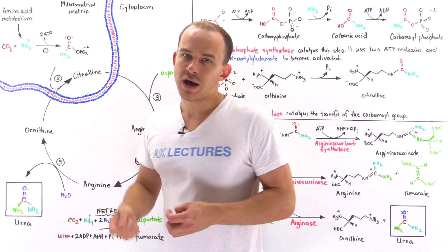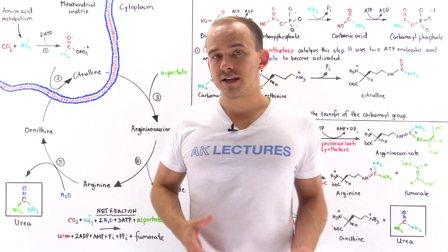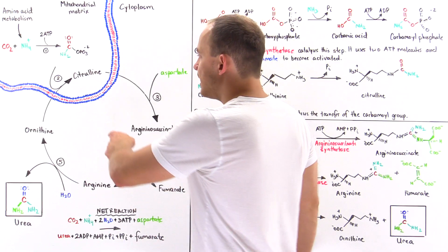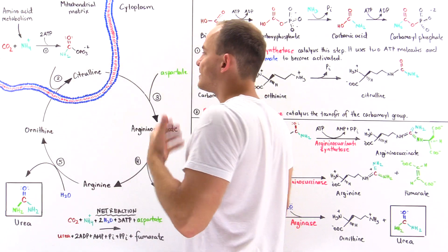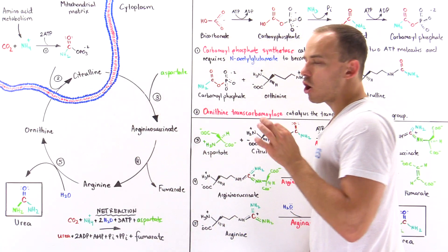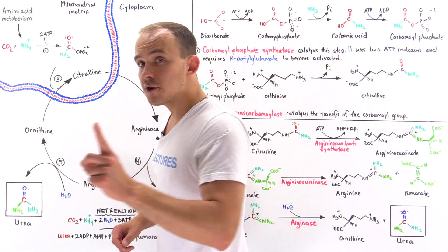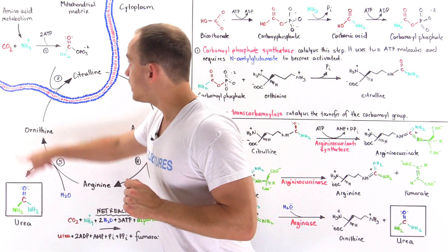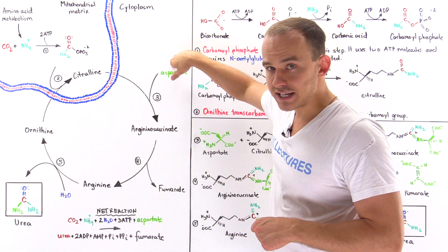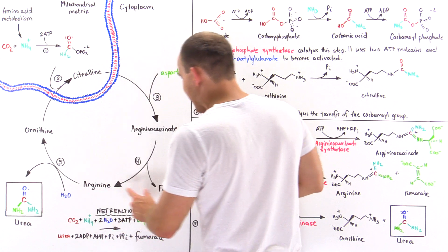Citrulline is another amino acid, but even though ornithine and citrulline are amino acids, they are not among the 20 amino acids used in protein synthesis. Once citrulline is formed in step two, it moves into the cytoplasm, where it combines with aspartate to form argininosuccinate. An important point: the first amino group that ends up in the urea came from free ammonium, but the second amino group comes from aspartate.